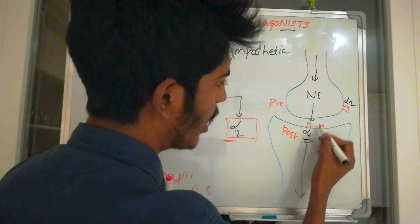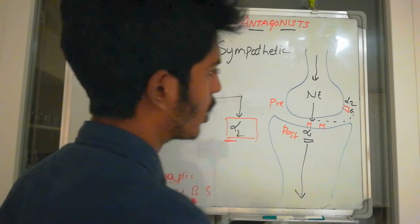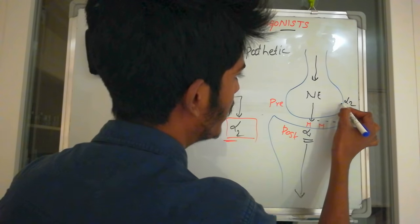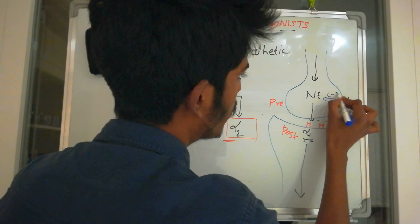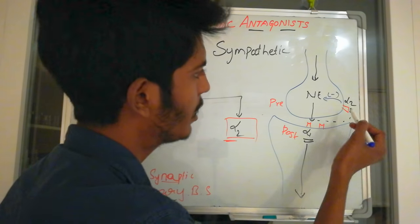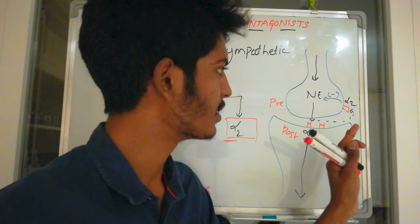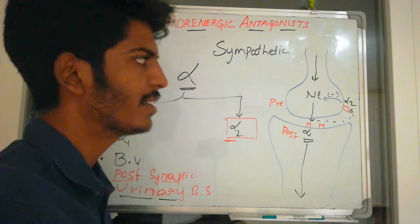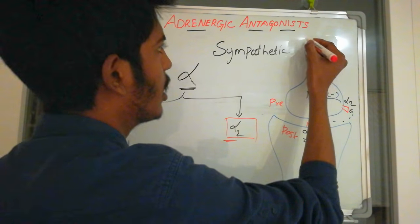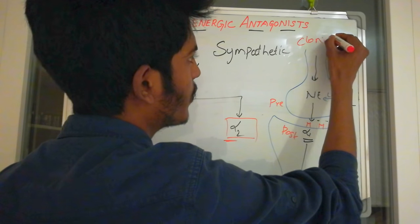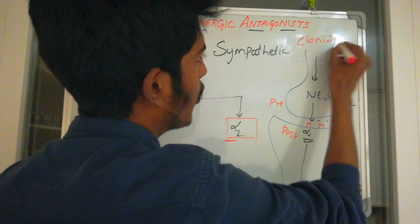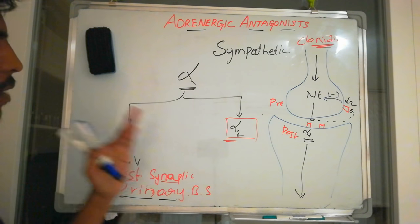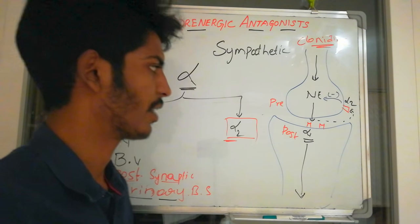The released norepinephrine binds with both alpha 1 and alpha 2. When it binds with alpha 2, it sends a negative feedback signal saying don't produce any more norepinephrine — so alpha 2 stimulation inhibits norepinephrine release. Alpha 2 agonist activity is shown by a drug called clonidine.